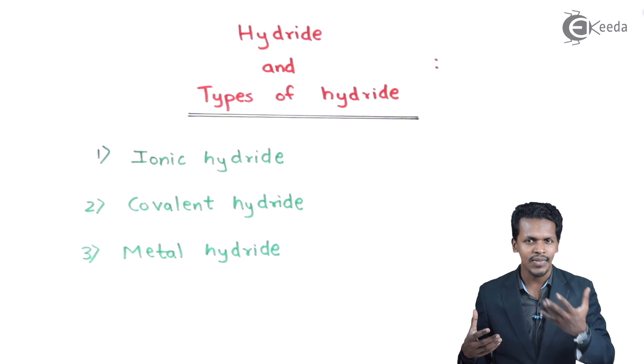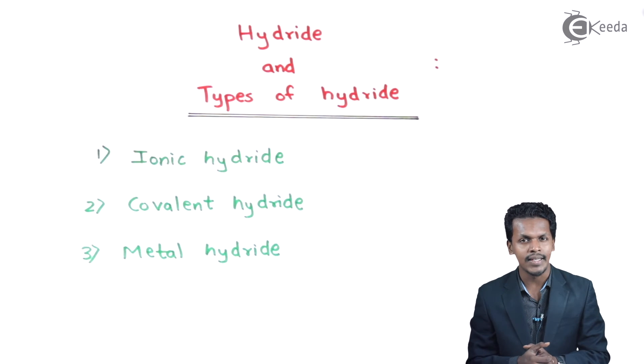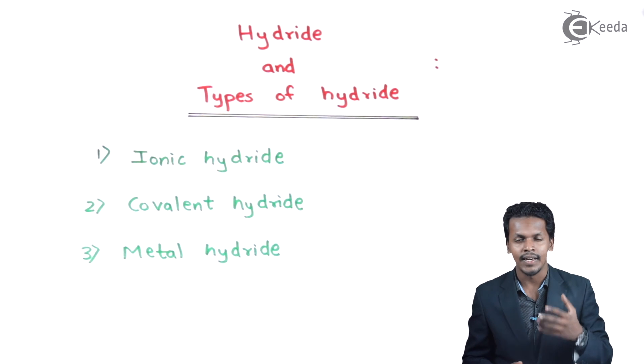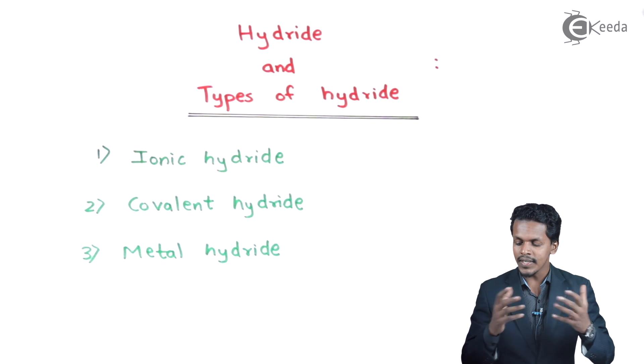Talking about metal hydride - this is where hydrogen is combined with d-block elements. For example, CrH (chromium hydride) is an example of metal hydride. There are certain different topics regarding properties and preparation that I will discuss separately.